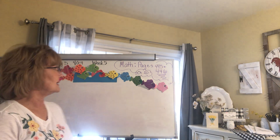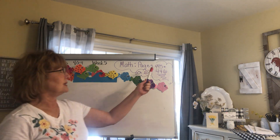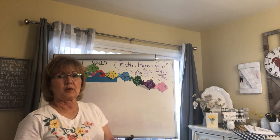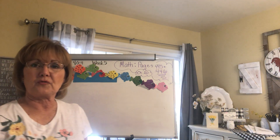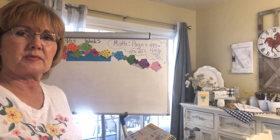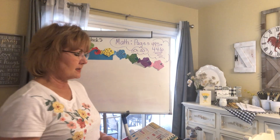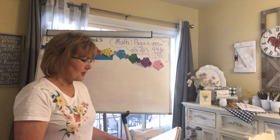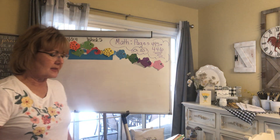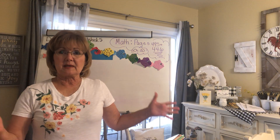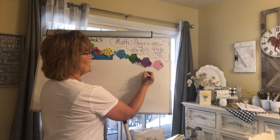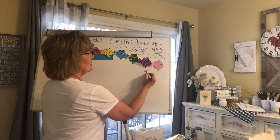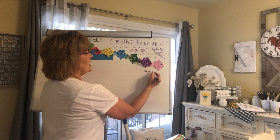Okay, I'm back again with math pages 445 and 446, so you are probably ready to go, right? It says multiply in any order — we've talked about that, just like four plus three is seven, so three plus four is seven.